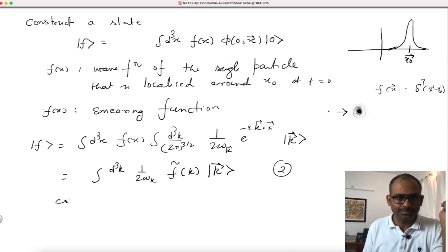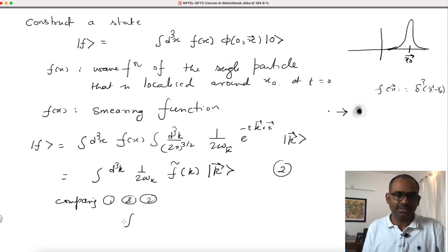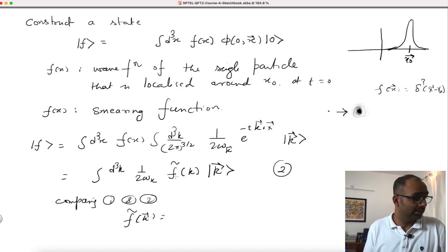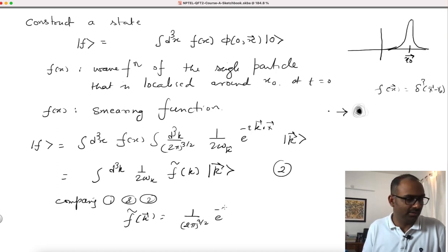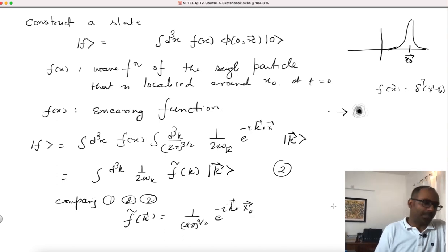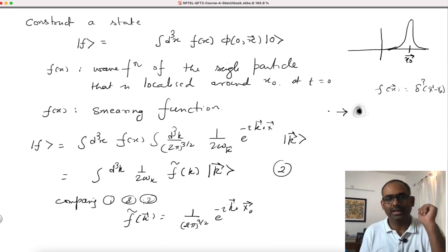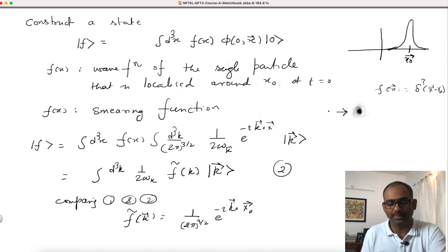Comparing the two expressions, f̃(k) is, apart from some unimportant factors, the wave function in momentum space. If f̃(k) is given by e^(−ik·x₀), that corresponds to a particle completely localized at x₀ — this is the momentum-space wave function for complete position localization.